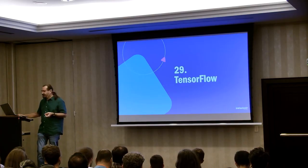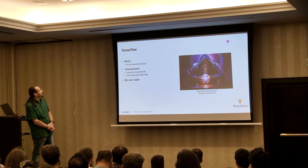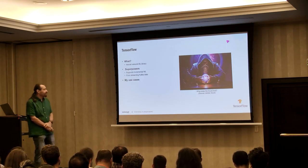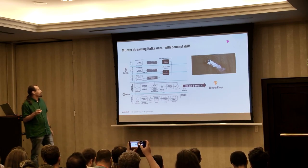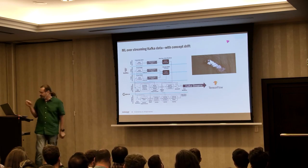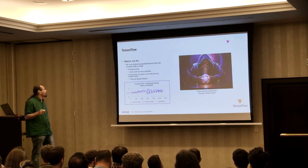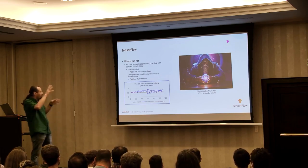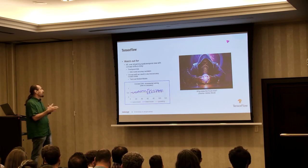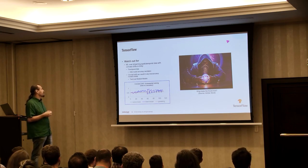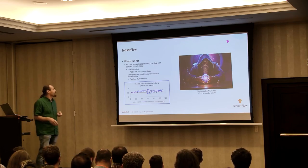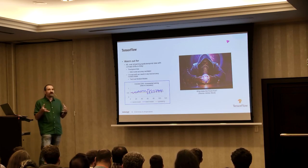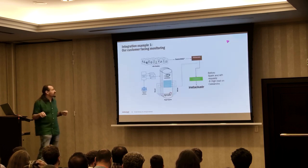Number twenty-eight: TensorFlow — a neural network machine learning library that supports incremental machine learning from streaming Kafka data. I plugged it into my drone delivery application and started doing machine learning across the Kafka Streams. Things to watch out for: machine learning over streaming, especially temporal data with concept drift, is tricky. There's time-space bias, model accuracy oscillation, and when there's a concept shift in the data, the model is typically worse than even just guessing initially. One idea for solving this is to train and use multiple models concurrently.